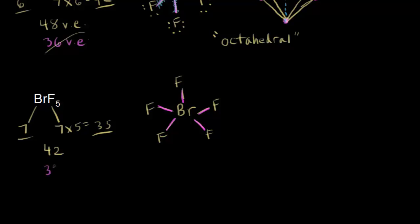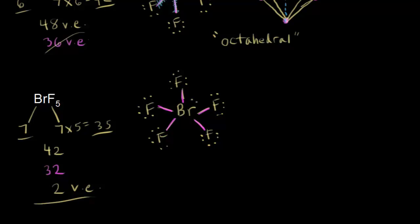42 minus 10 is 32 valence electrons left over, and we start putting those on our terminal fluorine atoms. We give each fluorine an octet, so 6 more valence electrons around each of our 5 fluorine atoms — 6 times 5 is 30. So 32 minus 30 gives me 2 valence electrons left over, and those go on our central atom as a lone pair of electrons on our central bromine. Our dot structure is done.